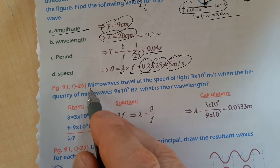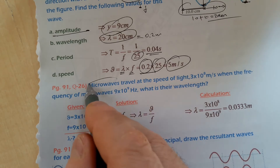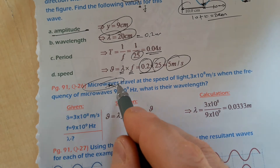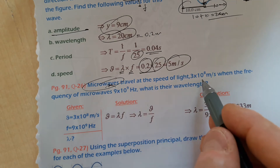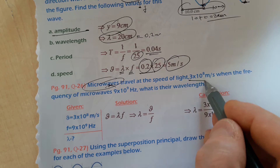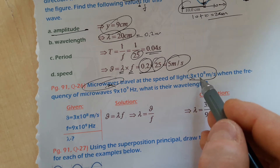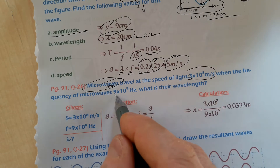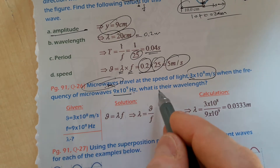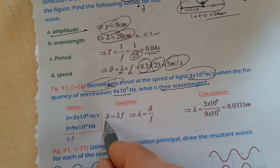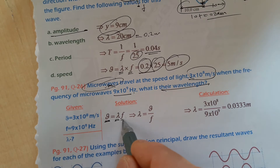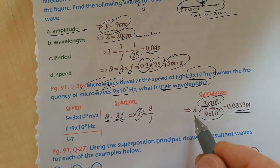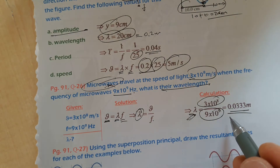Question number twenty-six: microwaves travel at the speed of light, 3×10⁸ m/s. When the frequency of the microwave is 9×10⁹ Hz, what is the wavelength? Using v = λf, λ = v/f. Substituting the given speed and frequency, you can calculate the wavelength of the microwave.